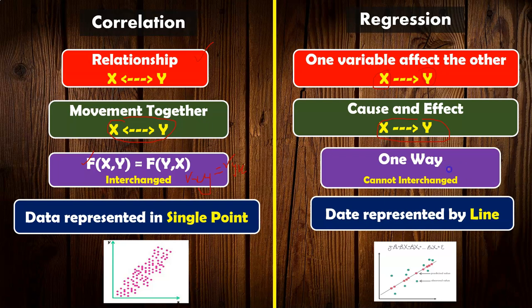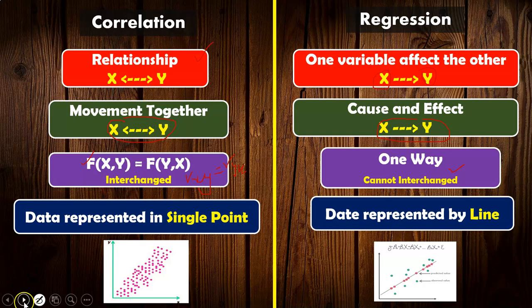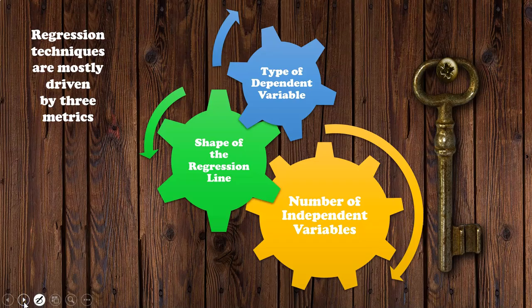In regression, the interchange property does not hold. Each data point is represented as a single point in correlation, but in regression we find the average relation between variables X and Y using a straight line. The main intention of regression is to find the straight line equation. This is the key way in which correlation and regression differ.